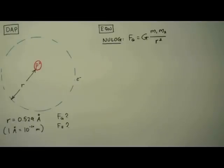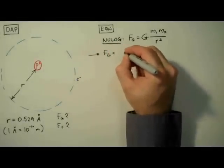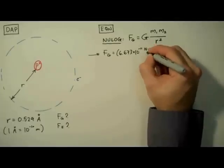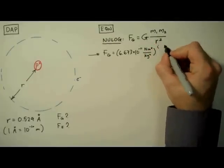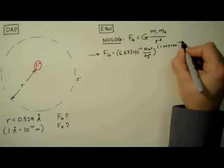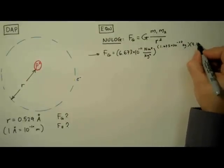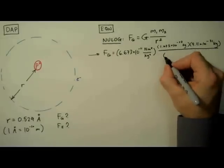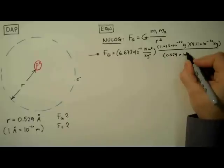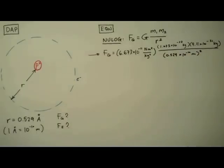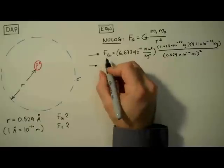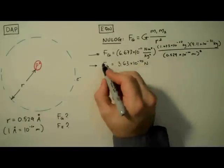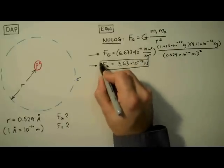So gathering our constants from a reliable source, like a ridiculously expensive textbook or Wikipedia, whichever you prefer, we have gravitational force is equal to 6.673 times 10 to the negative 11th newton meters squared per kilogram squared, times the mass of a proton, 1.673 times 10 to the negative 27th kilograms, times the mass of an electron, 9.11 times 10 to the negative 31st kilograms, divided by the Bohr radius, 0.529 times 10 to the negative 10th meters squared. Plugging this into a trusty TI-83 plus, I get the gravitational force is equal to 3.63 times 10 to the negative 47th newtons. Box that up.